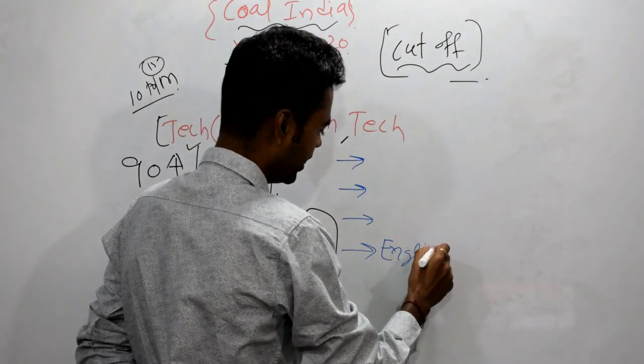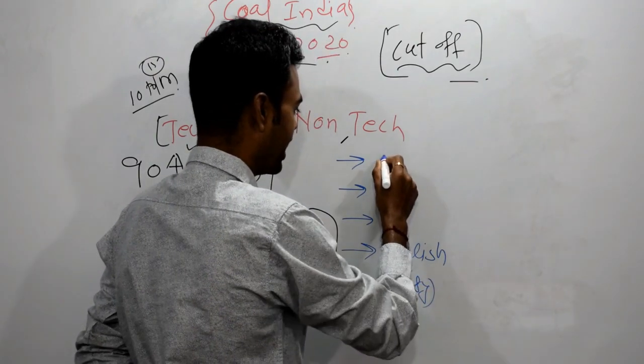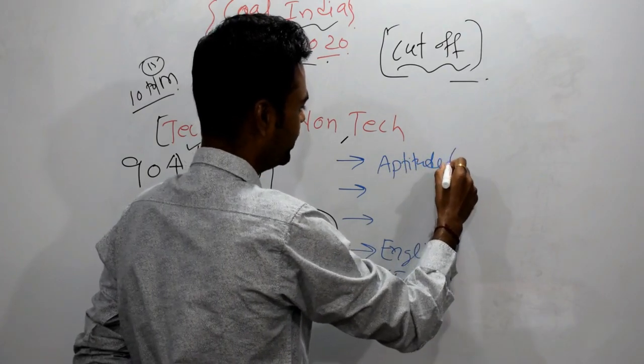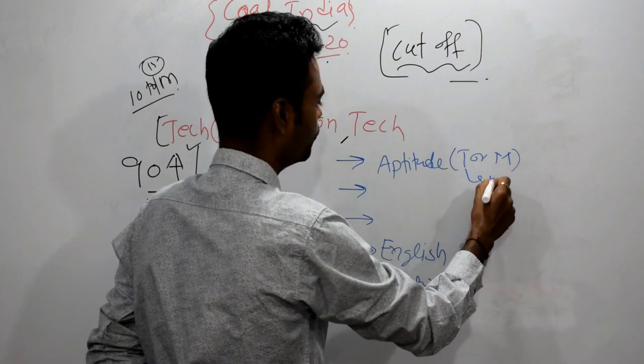English, everybody saying it was easy. Aptitude, everybody saying it was difficult, tough or moderate level, hard or moderate level.